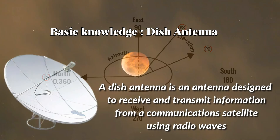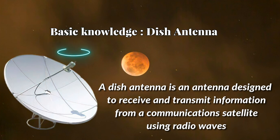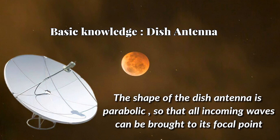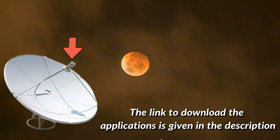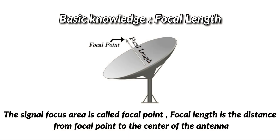The elevation of the satellite is 45 degrees here. Basic knowledge — Dish Antenna: A dish antenna is an antenna designed to receive and transmit information from a communication satellite using radio waves. The shape of the dish antenna is parabolic, so that all incoming waves can be brought to its focal point. The signal focus area is called the focal point, and the focal length is the distance from the focal point to the center of the antenna.